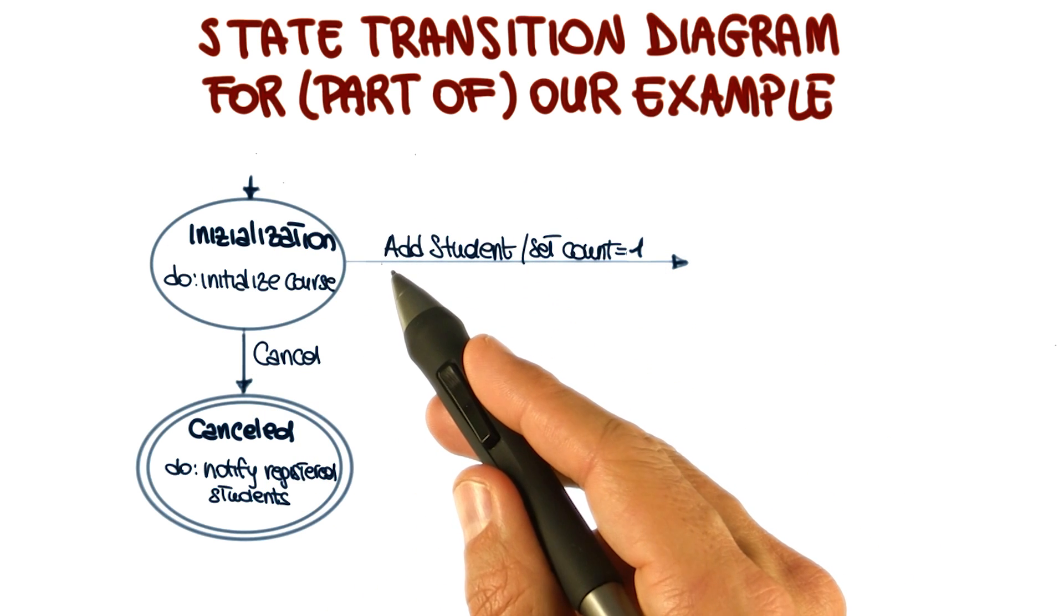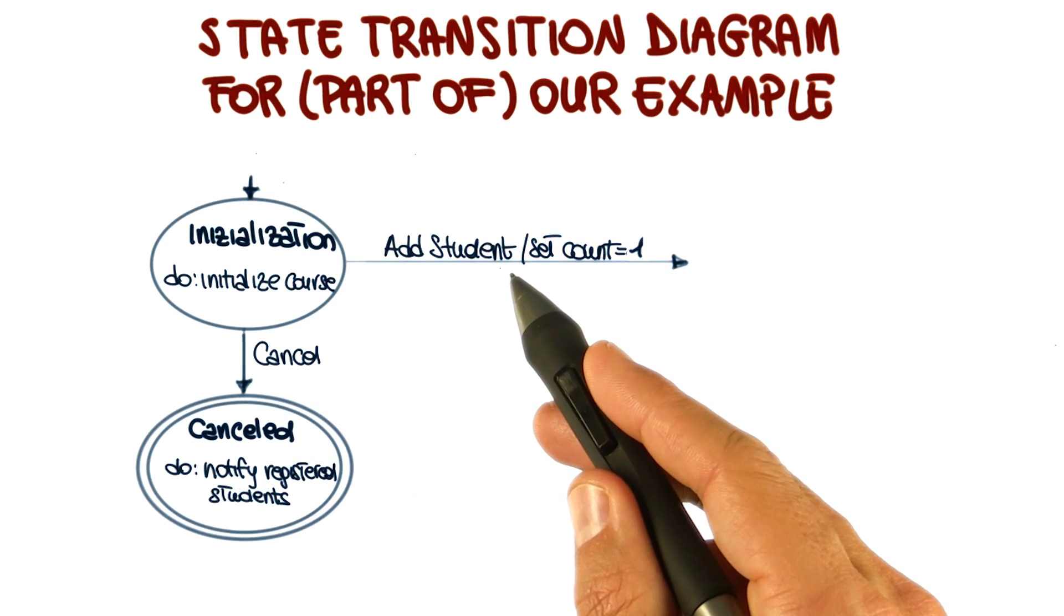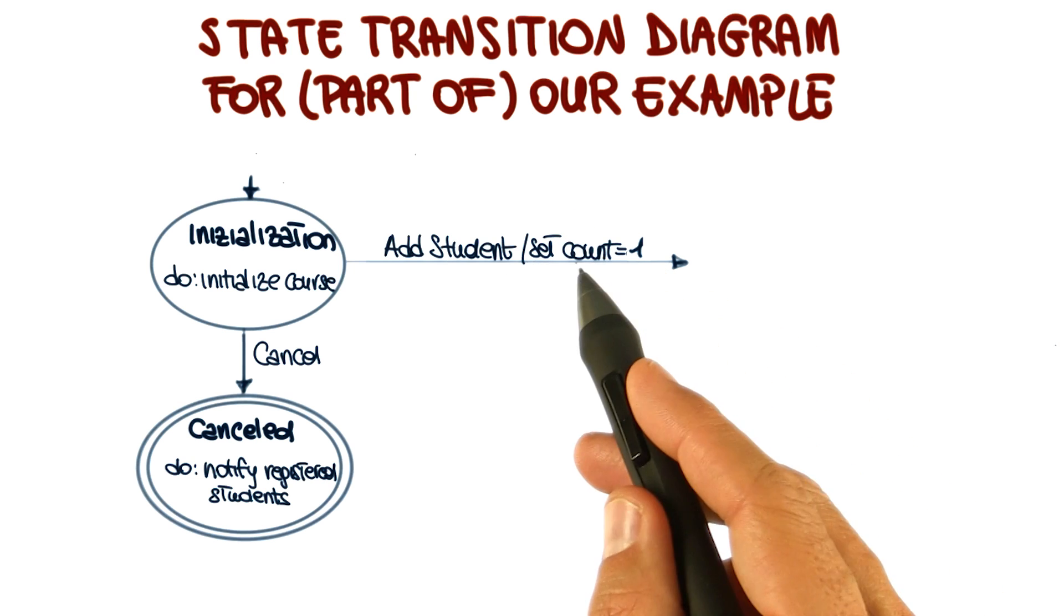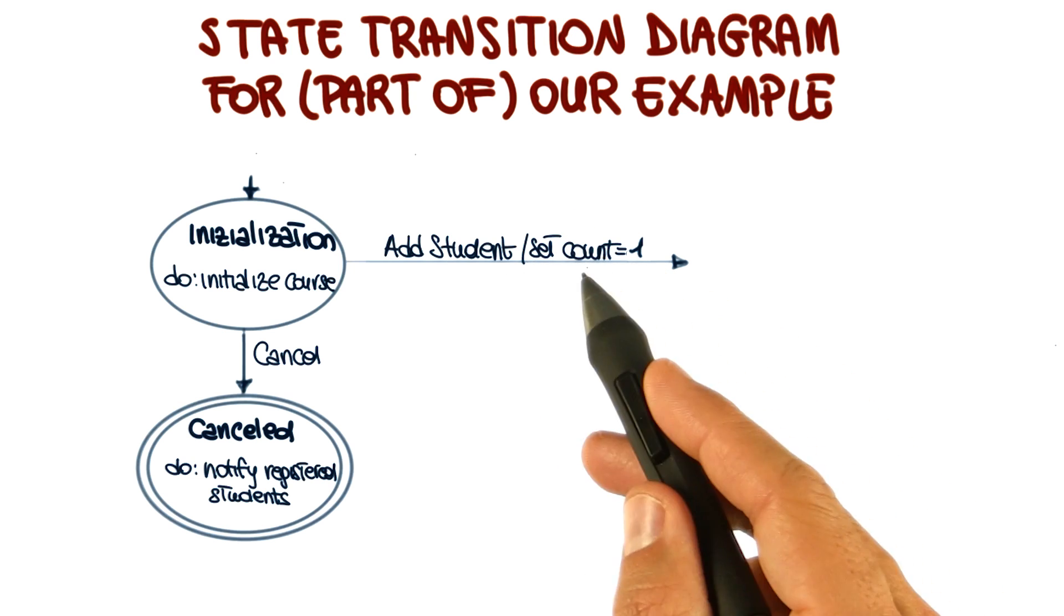What can happen is that a student can register. So in this case, the add student event is triggered. And the corresponding action is to set the count, in this case the count of students for the course offering, to 1.